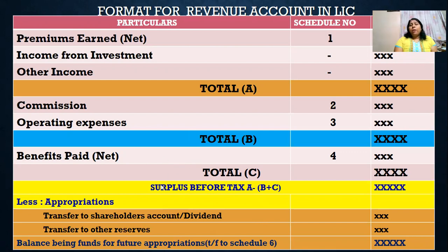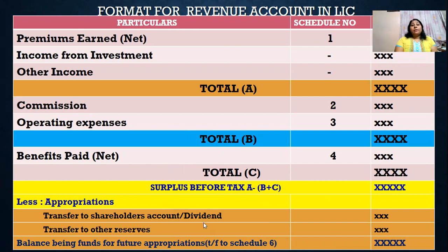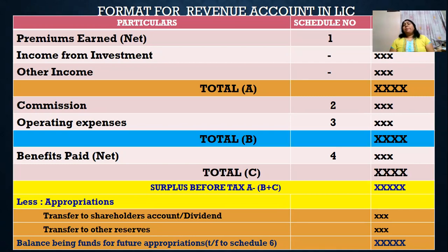When we look into the problem, is there any special information about dividends paid to shareholders or any other reserve given? Once it is given in the problem, we need to consider what appropriations are to be made in the current year. After that, the balance will be the funds for future appropriation, which has to be transferred to schedule number six in the balance sheet. This is the revenue account format taught in the previous video.